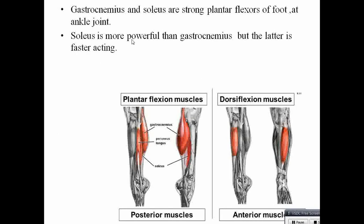Soleus is more powerful than gastrocnemius; it can act for a long time. Gastrocnemius is not so powerful but is very quick in action and gets tired very fast — because gastrocnemius is a white muscle and soleus is a red muscle.